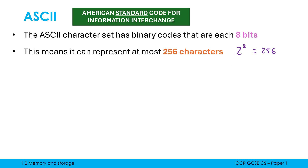We always have two as our base because it is binary — we've got two digits, zero and one — and our power is how many bits we have. In this case it gives us how many combinations we can get with eight bits. This formula is really important for future topics like images and sound as well.